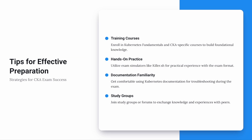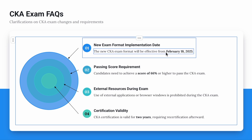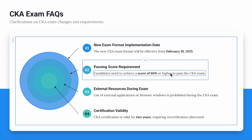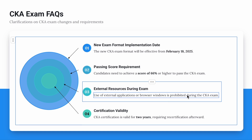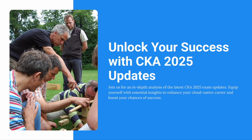Last but not least, all these changes are effective from February 18th, 2025. The minimum score percentage is 66%, as already discussed. Also make sure to get familiar with the browser or the external browser used for the CKA exam. That brings us to the end of the presentation — let me know if you have any doubts in your CKA preparation, and do leave your feedback or suggestions in the comments down below. Thank you.